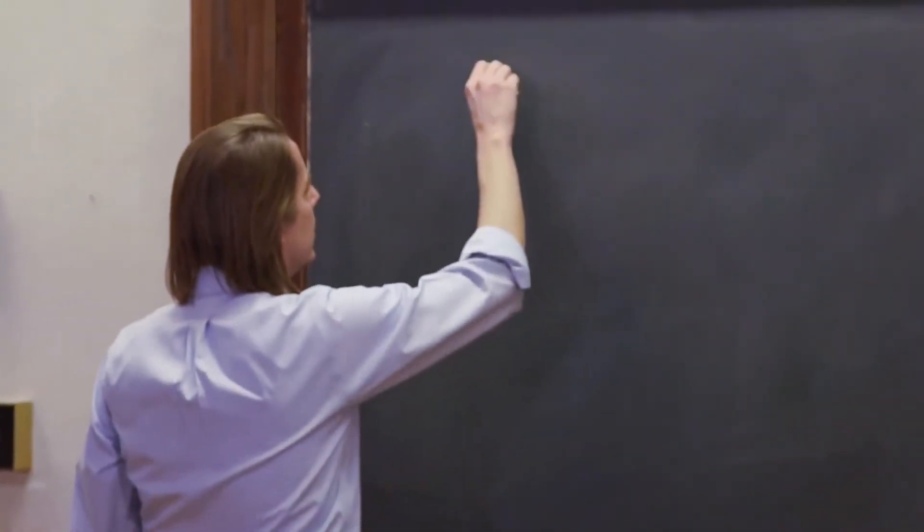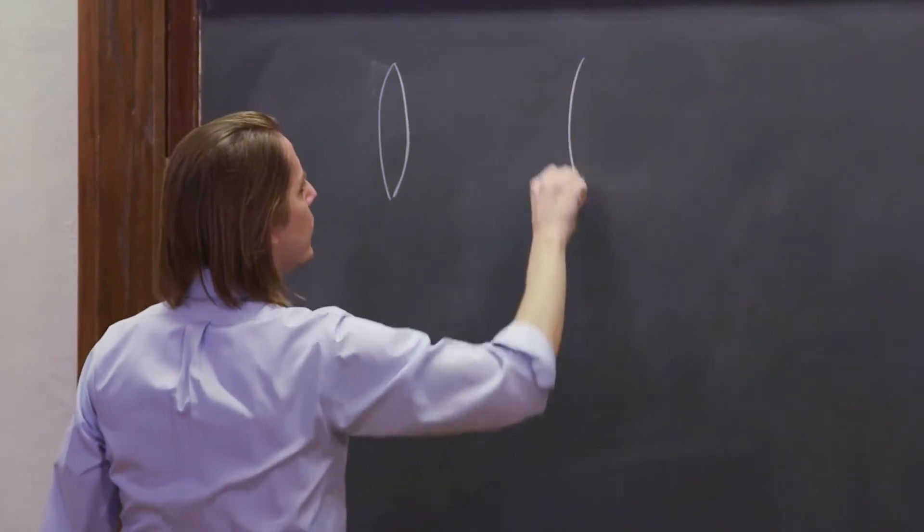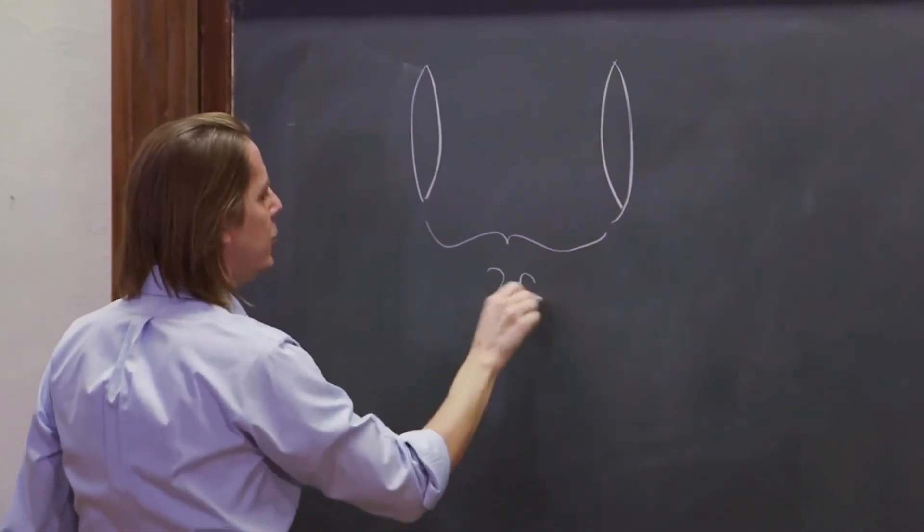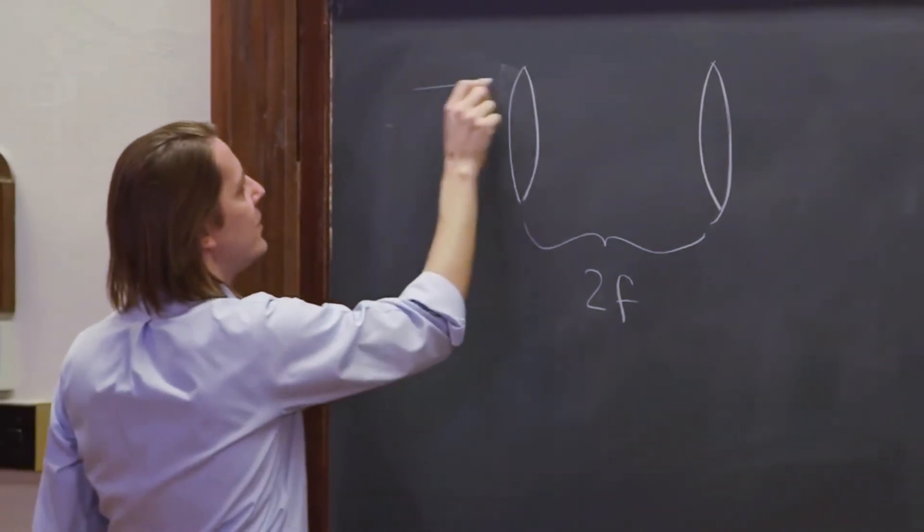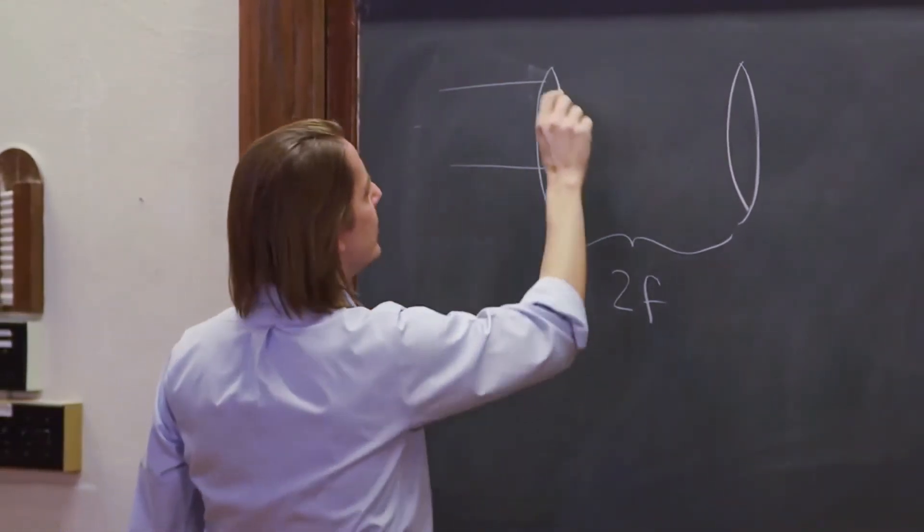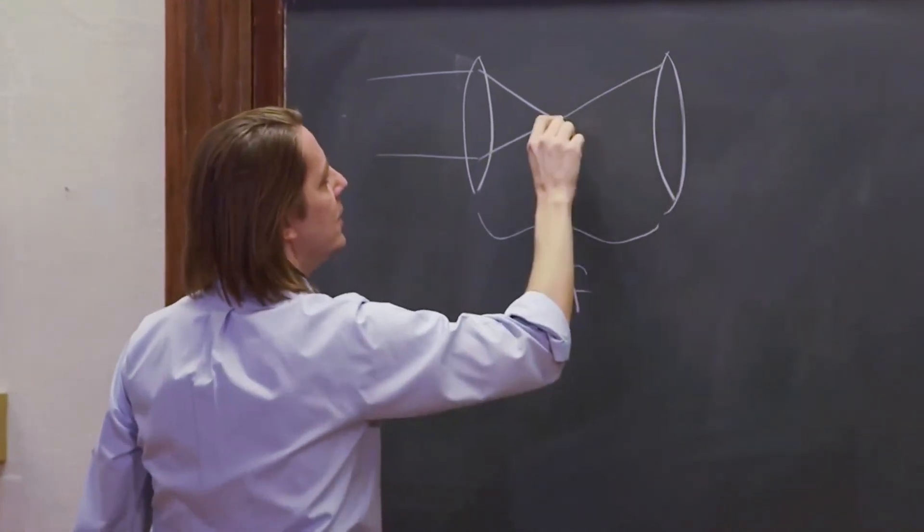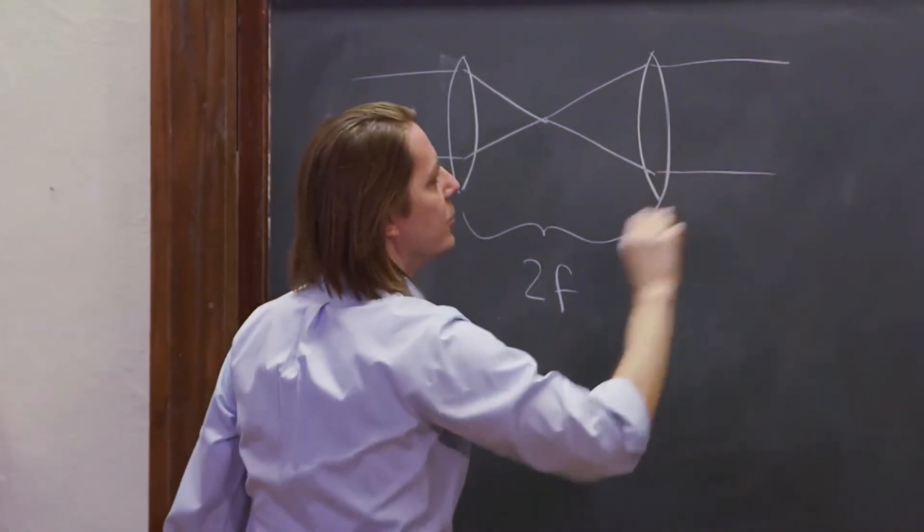Imagine two lenses with the same focal length F, separated by 2F. If light comes in to this lens, it will focus to the middle at F, then spread back out, hit that lens, and come out straight.